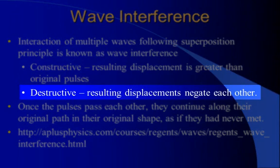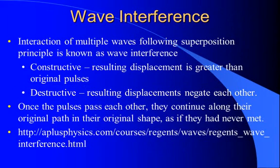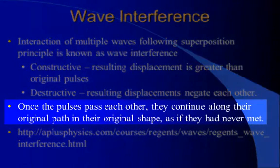Destructive interference is when the resulting displacements negate each other. The resulting displacement, the magnitude of the resulting displacement, is less than the individual displacements. Again, once the pulses pass each other, they continue along their original path, their original amplitudes, as if they had never met.